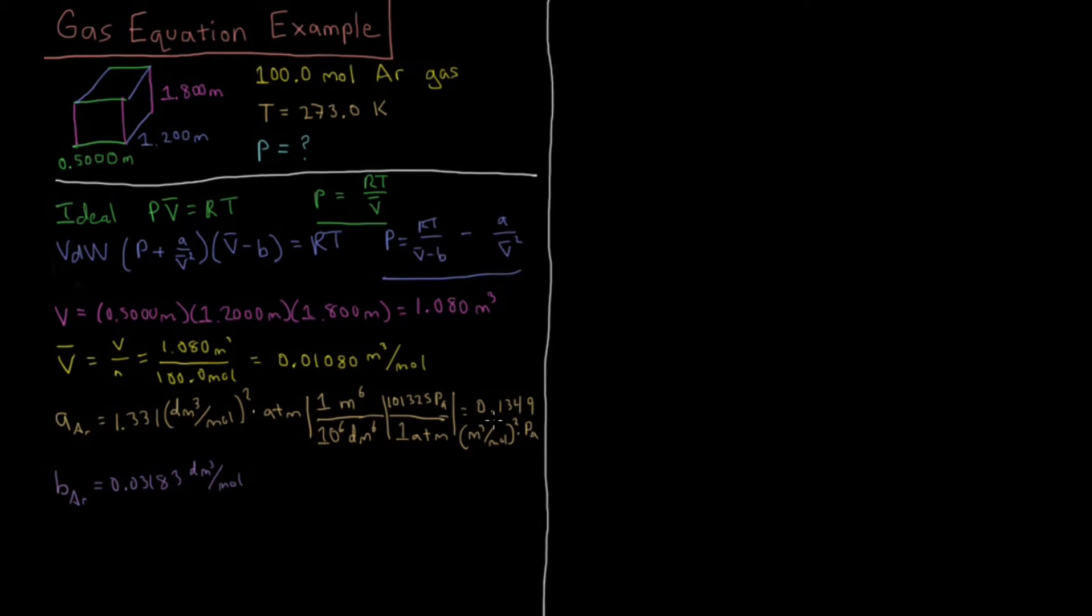If we want to convert this to the same unit to use it in this calculation, we put that one meter cubed, because there's only one of them, meter cubed over 10³ decimeters cubed, converting to meters cubed per mole.